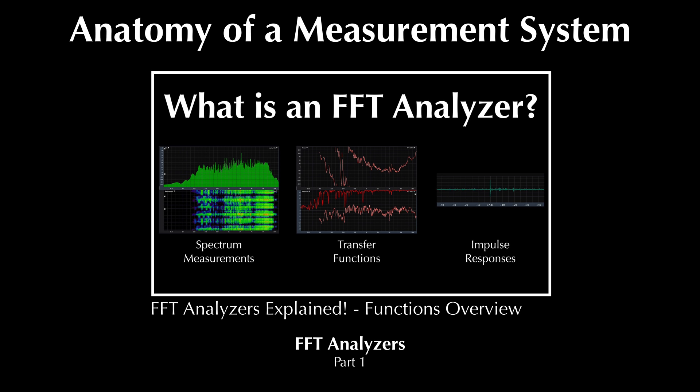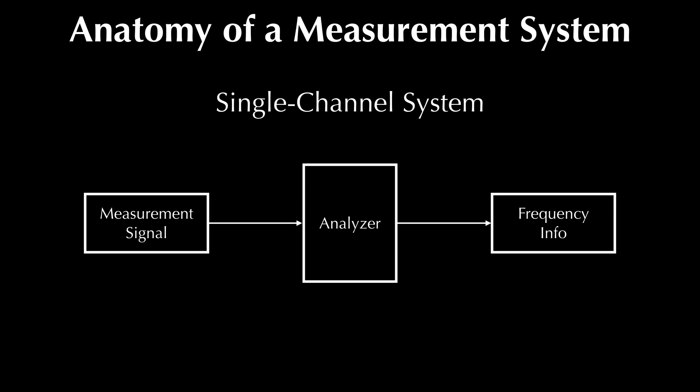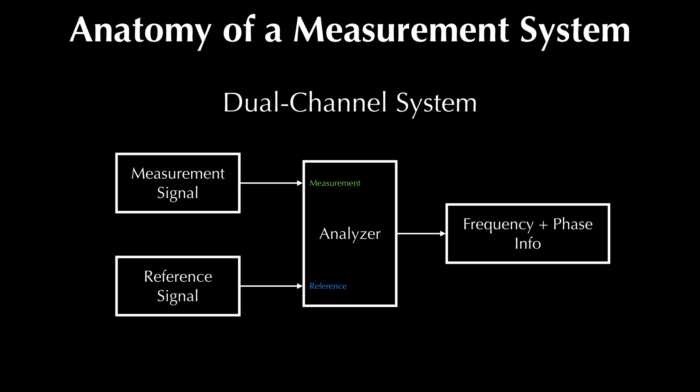In order to get into more detail about each of these functions, we'll take a closer look at the physical layout of the measurement systems involved. In the function overview video, there were two simplified system drawings. The first was a single channel system used for spectrum measurement, and the other was a dual channel system used for transfer functions and impulse responses.